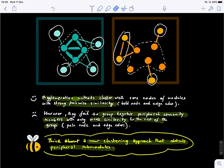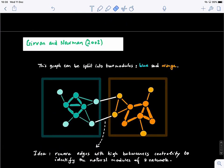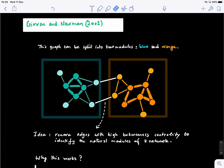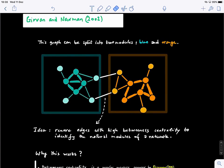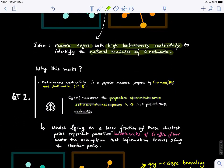So this is a very good idea and this is the algorithm of Girvan and Newman that was designed or proposed in 2012. So the basic idea is to remove edges with high betweenness centrality to identify the natural modules of a graph.